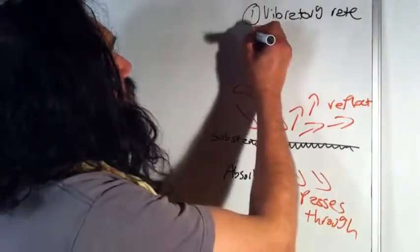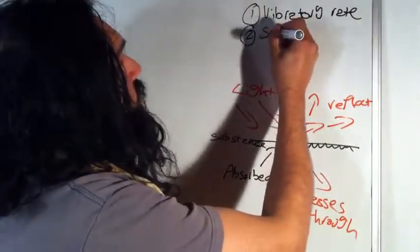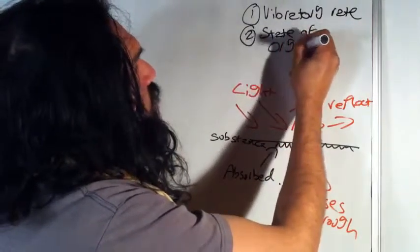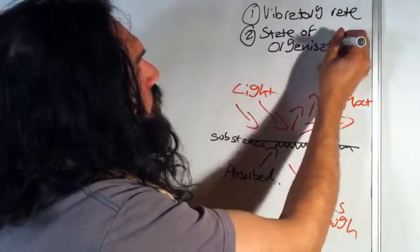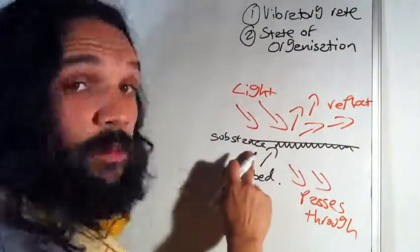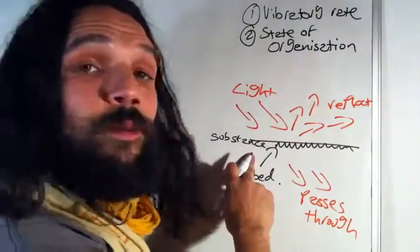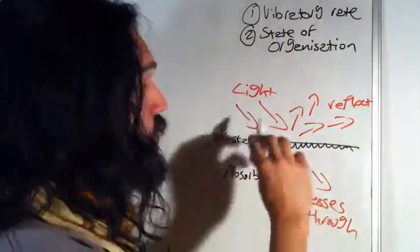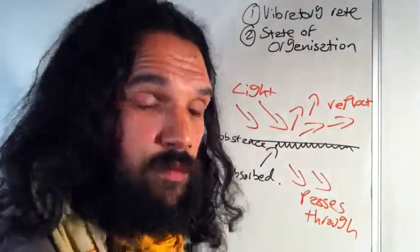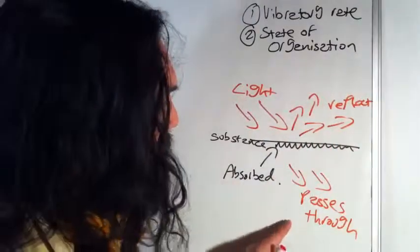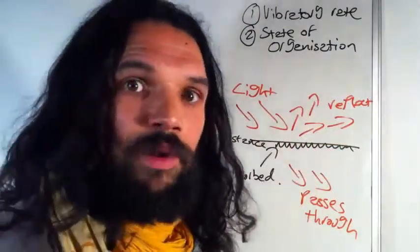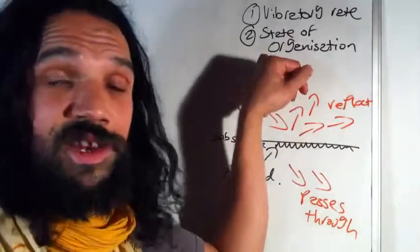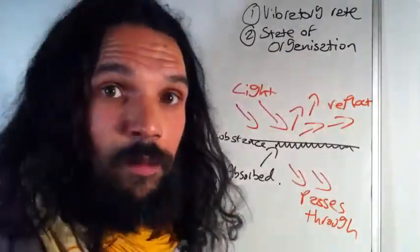The other thing is, this is very important, the state of organization. So if the receiving substance is randomly organized or disorganized, the light will pass right through, reflect, or refract. It won't be absorbed. An example of light passing through and reflecting is windows. So in windows, the molecular state of organization is quite random, so the light can pass right through.